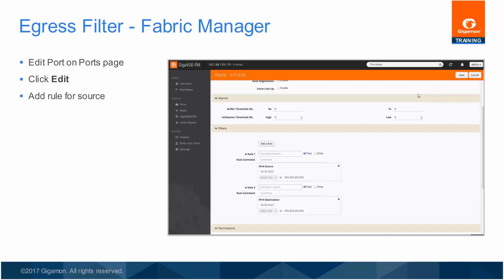This causes a rule condition to appear, and it looks just like rule choices used with basic flow maps. Use the pull-down list to choose IPv4 source as one of the rules. Type in the IP address of the web server — 10.10.10.21 in our example — along with either the CIDR subnet mask notation of /32 or the comparable dotted decimal notation of 255.255.255.255, both indicating a single host or an exact match.